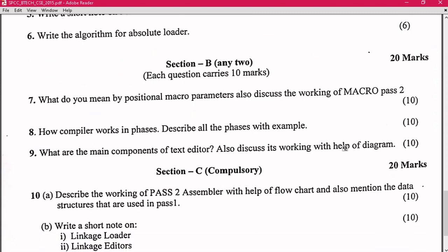So now switching to Section B. In Section B, you have to explain positional macro parameters and explain the working of macro pass 2. Then again, you can see there is a repeated question: how compiler works in phases, describe all the phases with example. This question was also there in the non-reappear paper, so this question is very important - phases of compiler. Do it very nicely.